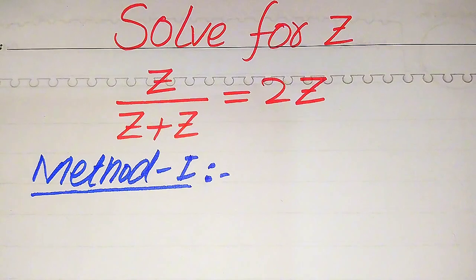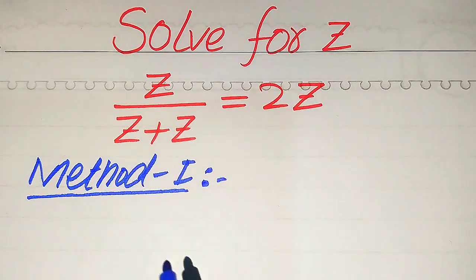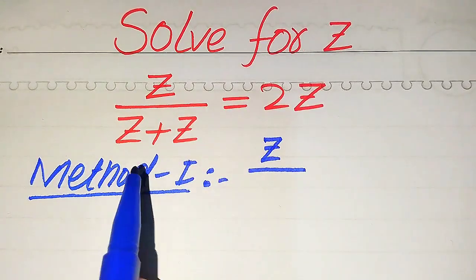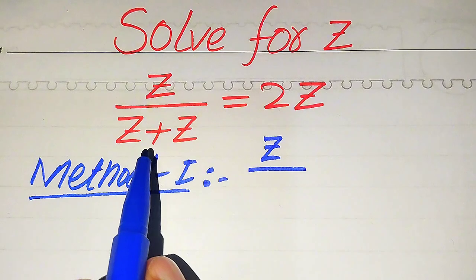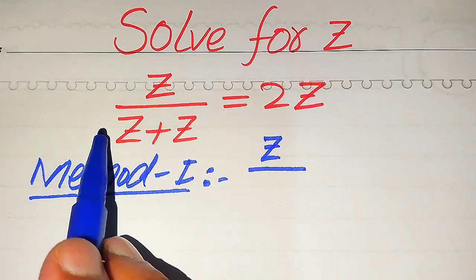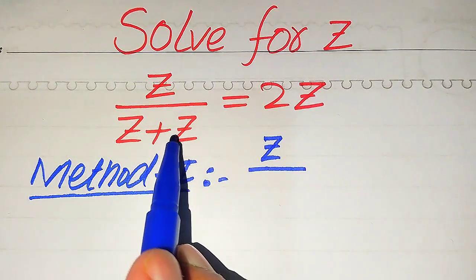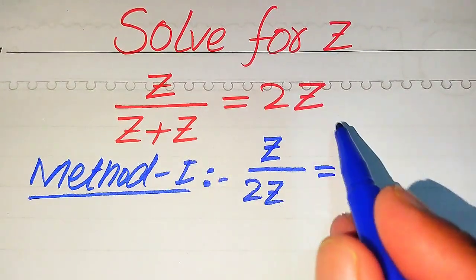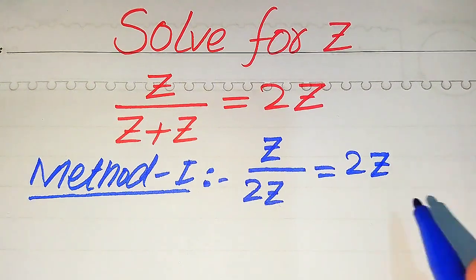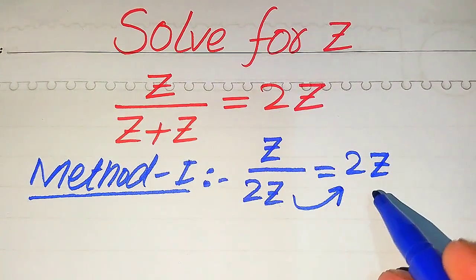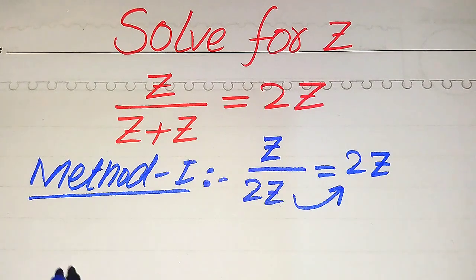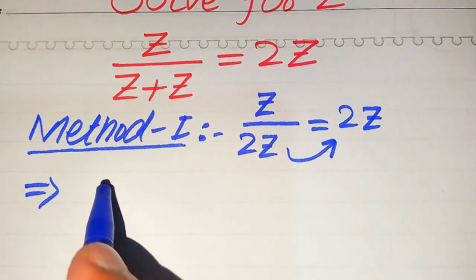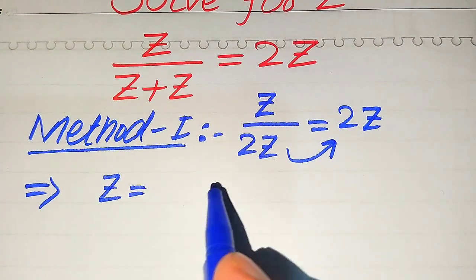In the first method, you see that the base of this term is z plus z. When we add two same variable terms, we just add the coefficients. The coefficients of these two terms are one, so when we add them it becomes two times of z. So z divided by two times of z equals two times of z. We then move the two times of z from the left hand side to the right hand side — when dividing on the left it becomes multiplied on the right — so z equals two times of z multiplied by two times of z.